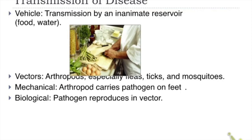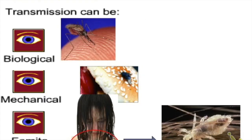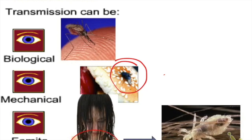Vehicle transmission uses food, water, or equipment. Vectors are arthropods — especially fleas, ticks, and mosquitoes. There are two types: mechanical vectors carry the pathogen on their body (e.g., flies landing on stool then on food) without the pathogen reproducing in them. Biological vectors allow pathogens to reproduce within them — dengue and malaria are examples. Fomites are inanimate objects such as a shared comb from someone with lice.